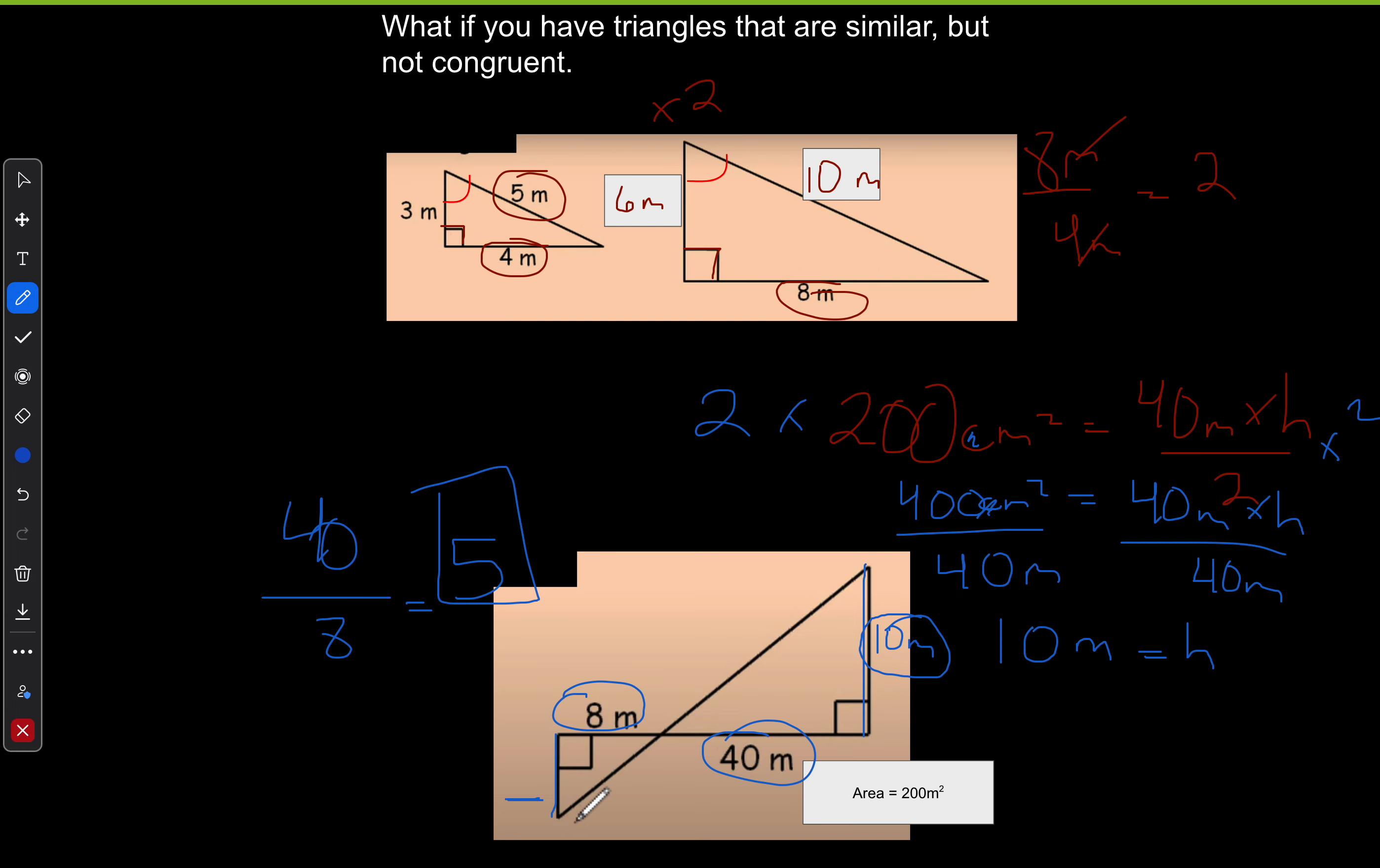So I take the 10 and divide it by five, and this would be two meters. And now I can use this to find the area of that triangle, because I have eight meters times two meters divided by two, and that's going to be eight meters squared. So the area of this triangle is going to be eight meters squared.